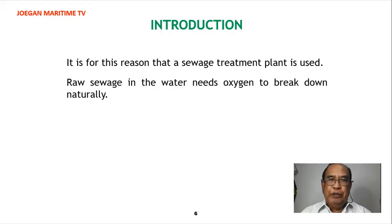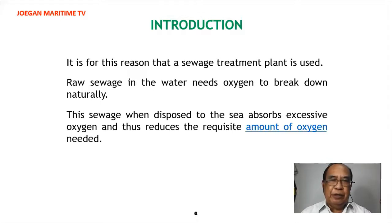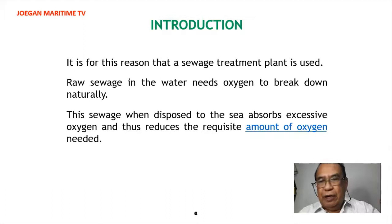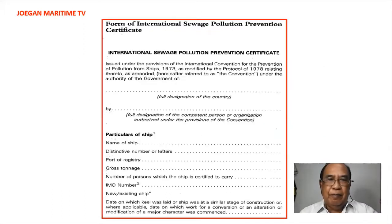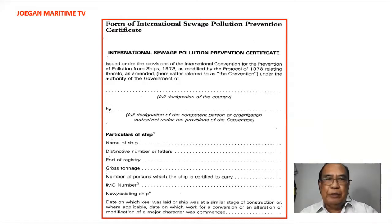It is for this reason that a sewage treatment plant is used. Raw sewage in the water needs oxygen to break down naturally; when disposed to the sea, it absorbs excessive oxygen and thus reduces the requisite amount of oxygen needed by marine life. This is an example of an International Sewage Pollution Prevention Certificate.